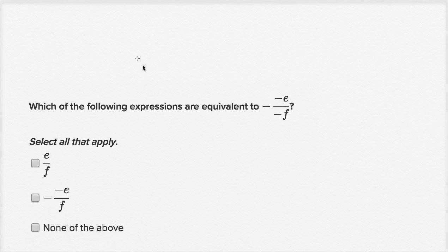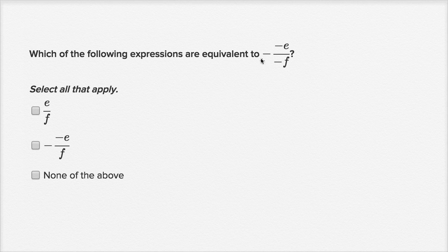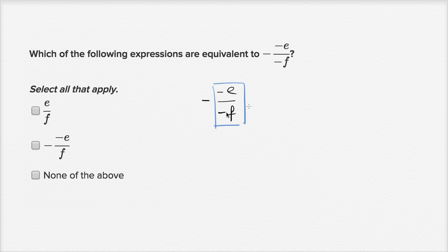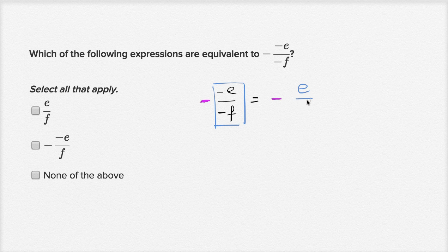Let's do one more. Which of the following expressions are equal to negative of negative e over negative f? Let's simplify this directly. We have negative, then negative e over negative f. Negative e over negative f — a negative divided by a negative is a positive — so that part simplifies to positive e over f. Then we still have the outer negative, so the whole expression simplifies to negative e over f.